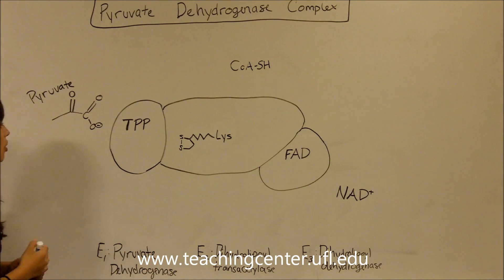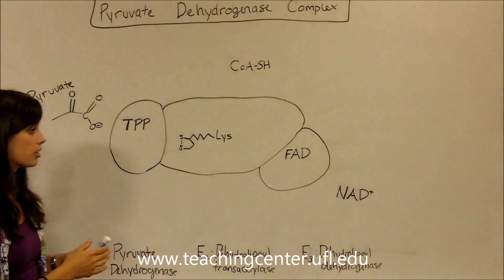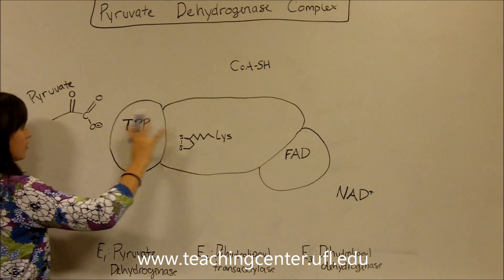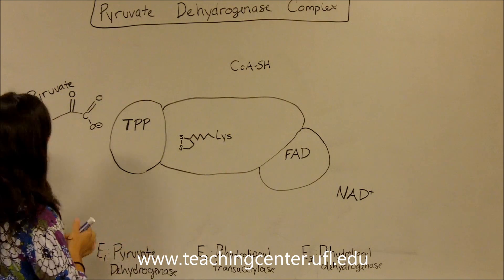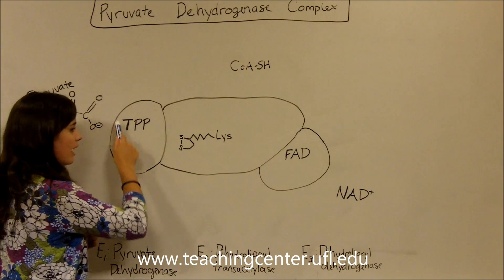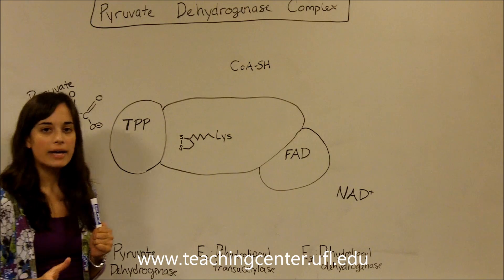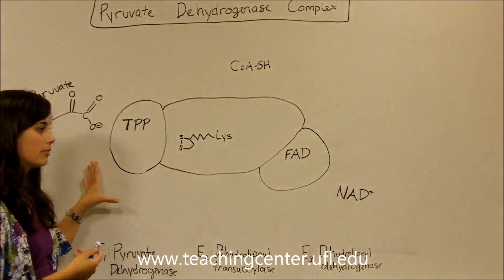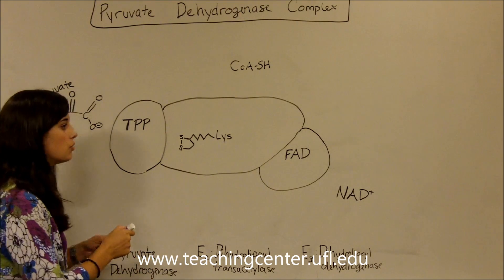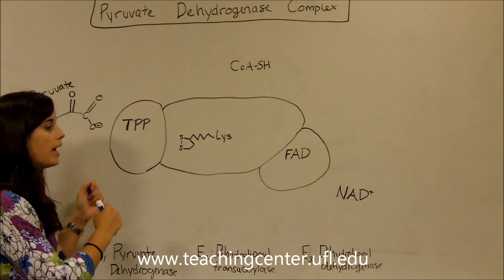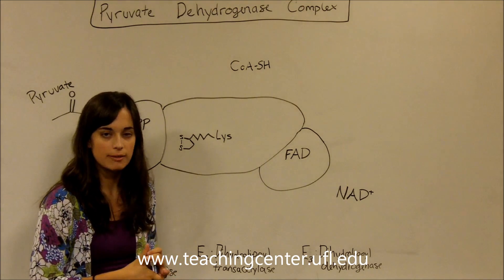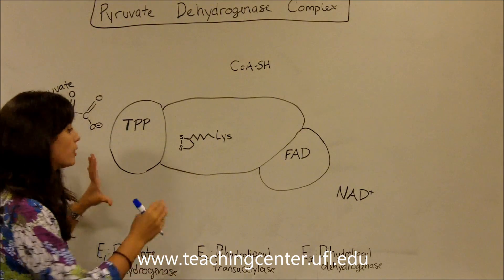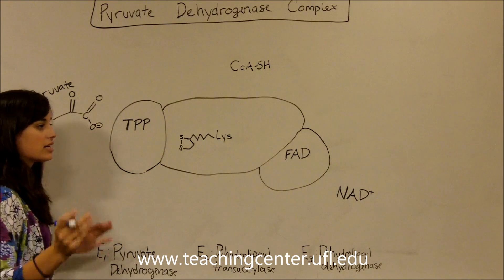We're moving from left to right in the breakdown of pyruvate to make acetyl-CoA. The first thing pyruvate is going to do is interact with TPP — thiamine pyrophosphate — which is bound to E1, your pyruvate dehydrogenase. Its role is to interact directly with pyruvate and kick off a CO2 to form hydroxyethyl-TPP. It has a five-membered ring that interacts with pyruvate, binds it, and kicks off the CO2.